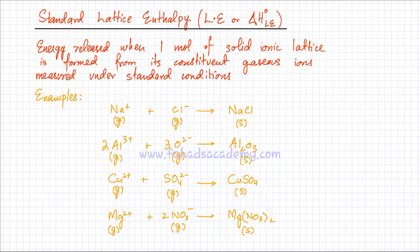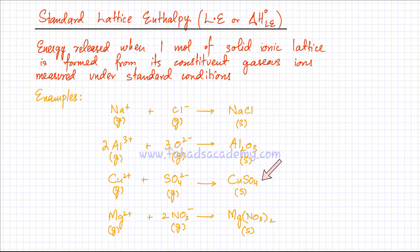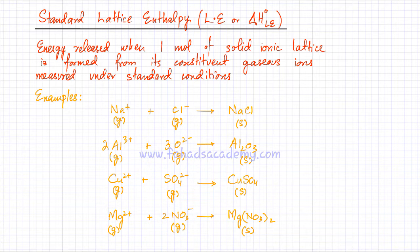Similarly, one mole of solid ionic lattice of copper sulfate is formed from its constituent gaseous ions, which are Cu²⁺ ions and SO₄²⁻ ions, and again the state of the ions should be gaseous. Lastly, one mole of magnesium nitrate, a solid ionic lattice, is formed from its constituent gaseous ions which are magnesium ions and nitrate ions.